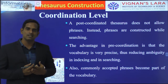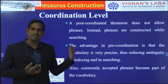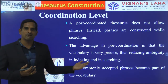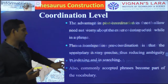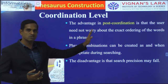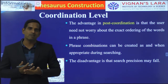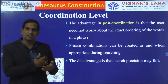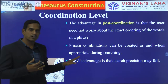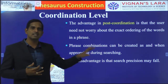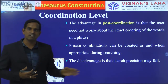The advantage of pre-coordination is that when you have a clear set of phrases, we will have a clear index construction, and the effectiveness of your search retrieval will be better. Most commonly used phrases will also be part of your vocabulary. The advantage of post-coordination is that the user can give a search query in whatever order they want, and phrase combinations can be created while performing the search. The disadvantage is that precision will be very low.